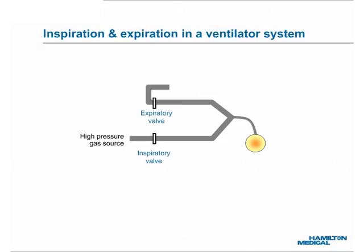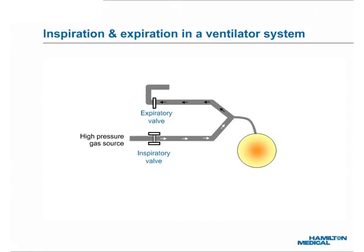In a real ventilator system, hand A is replaced with an inspiratory valve, and hand B with an expiratory valve. The circuit pressure is equivalent to airway opening pressure, or PAO, and the balloon pressure to alveolar pressure, or PALV. Balloon inflation: when the inspiratory valve opens and the expiratory valve closes, the circuit pressure becomes higher than the balloon pressure, and gas is pushed into the balloon — the balloon grows. Balloon deflation: when the inspiratory valve closes and the expiratory valve opens to the environment, the circuit pressure drops below the balloon pressure, and gas is pushed out of the balloon — the balloon shrinks. Valve control in a real ventilator system is more complicated than this, but the basic principle remains valid.